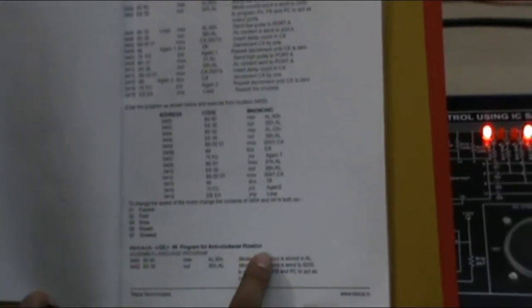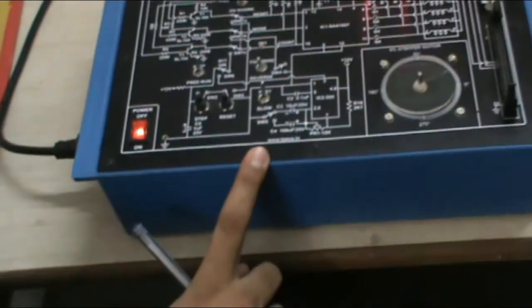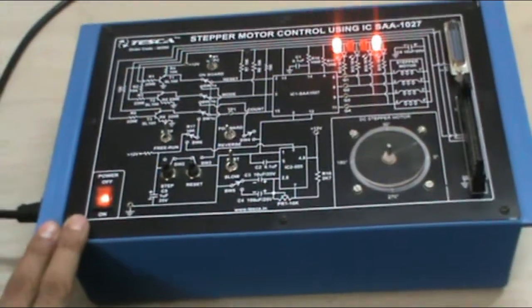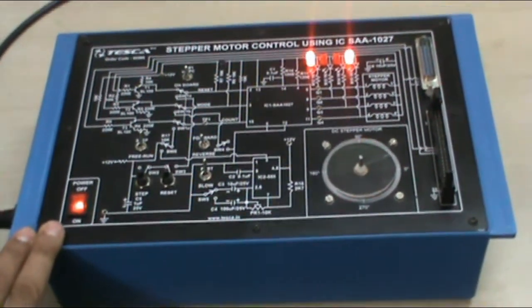If we connect it with the 8086 microprocessor, then program for clockwise rotation, this is the assembly language code, and the program for anti-clockwise rotation, this is the assembly language code. You can consult the lab manual for different codes if you use this stepper motor with the microprocessor or PC. For any further information, please consult the lab manual. Thank you.